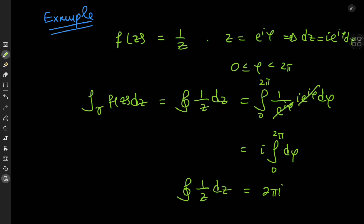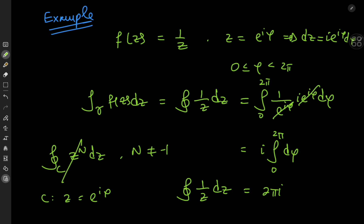A noteworthy result is that the integral over the closed contour defined by the unit circle centered at the origin of z^n dz — where n is an integer that's not negative 1 (like the case we just evaluated) — using the periodicity of the complex exponential function e^(iφ), it can be shown that this integral always equals zero.